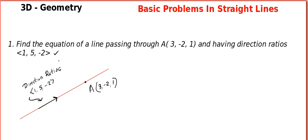In lesson number 2, we discussed three different types of equations for straight lines in three dimensions. Let me remind you — equation means a rule followed by every coordinate in the line. A line is made up of an infinite number of points, and equation means a rule followed by every point in that line.